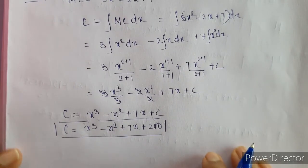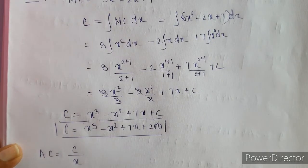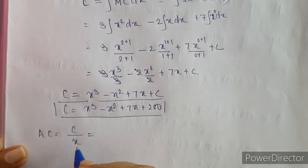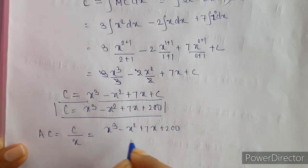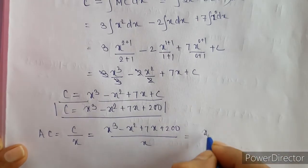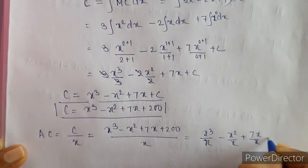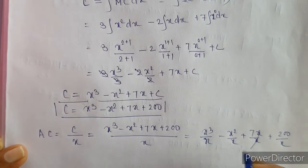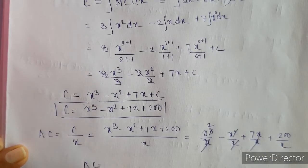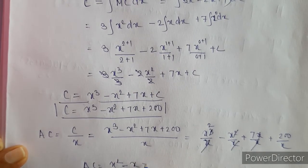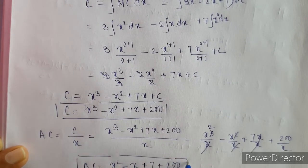Next we have to find the average cost. Average cost is total cost divided by total output X. So we have X cubed minus X squared plus 7X plus 200, all divided by X. We can split this as X cubed over X, minus X squared over X, plus 7X over X, plus 200 over X. Simplifying, the average cost is X squared minus X plus 7 plus 200 over X.